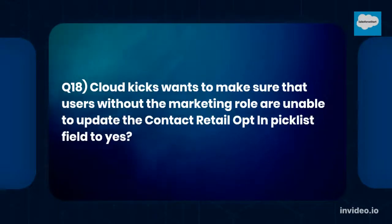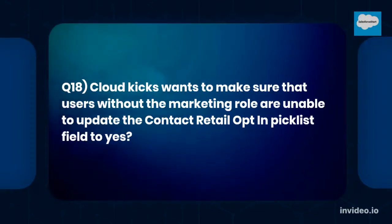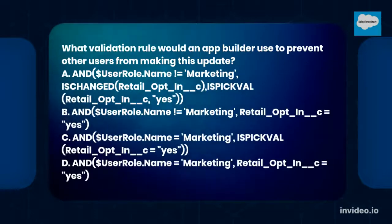Question number 18: Cloud Kicks wants to make sure that users without the marketing role are unable to update the contact retail opt-in picklist field to yes. What validation rule would an app builder use to prevent other users from making this update?